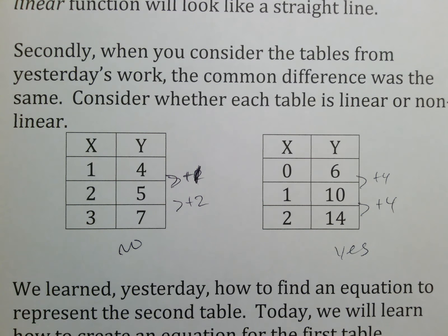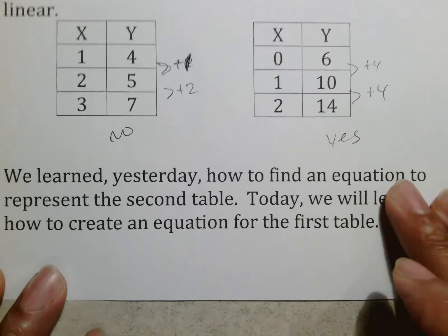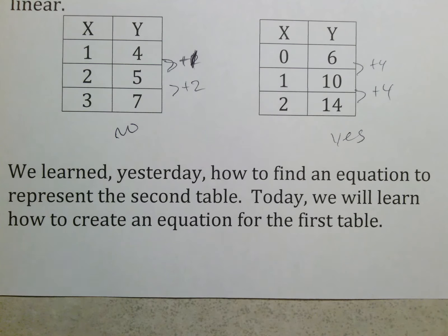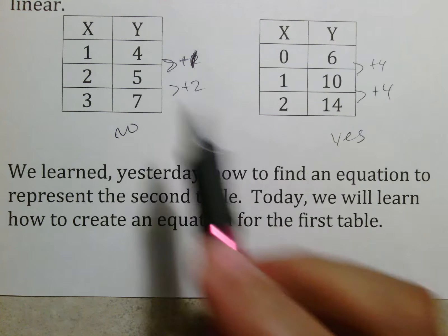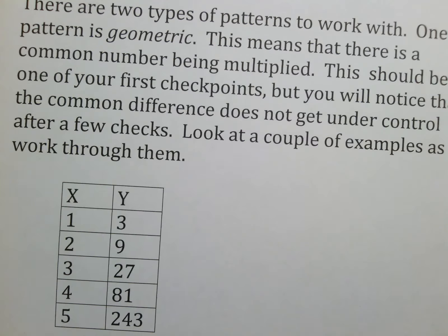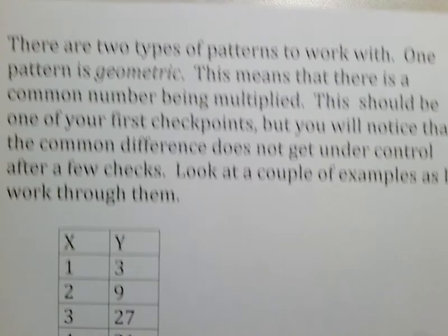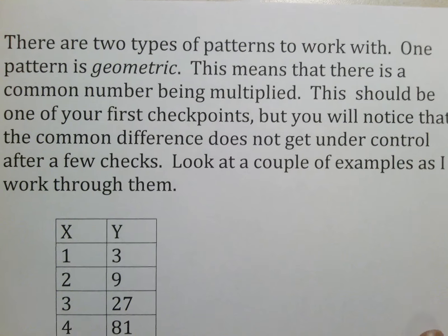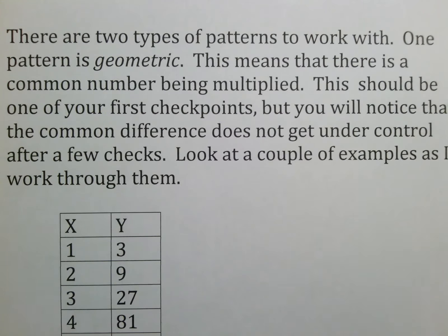You simply go through and check the differences — as long as the differences are the same all the way through, it's linear. What we learned yesterday was how to find an equation for a linear table. Today we're going to look at how we create an equation for non-linear tables. Keep in mind there are two types of non-linear patterns we work with. One pattern is geometric, which means a common number is being multiplied.